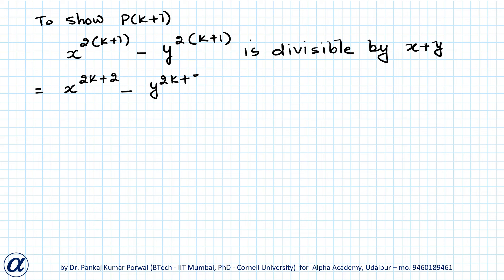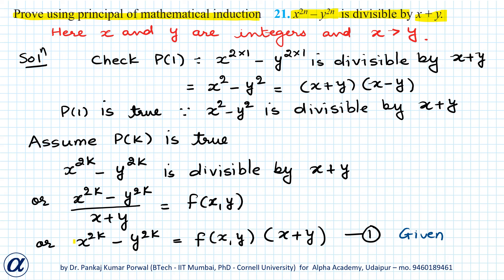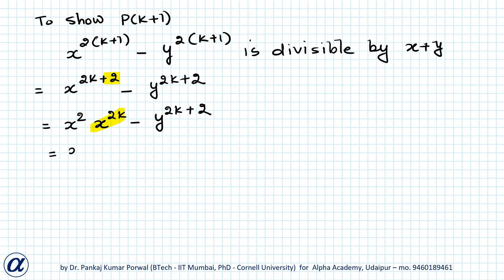By taking the power of 2 out, I can write this as x squared into x to the power 2k minus y to the power 2k+2. Now here, x to the power 2k I can substitute from equation (1) as f(x,y) into x plus y, giving x squared into f(x,y) into x plus y plus y to the power 2k, minus y to the power 2k+2.